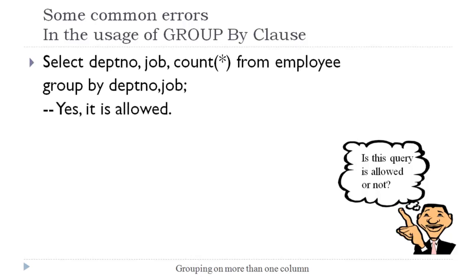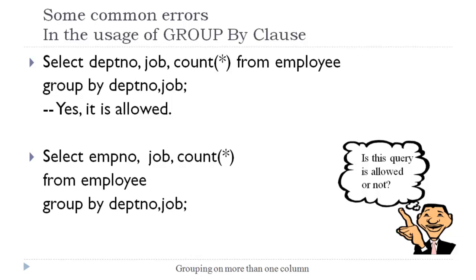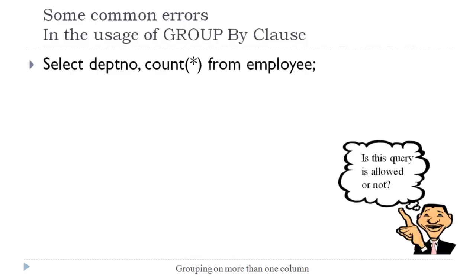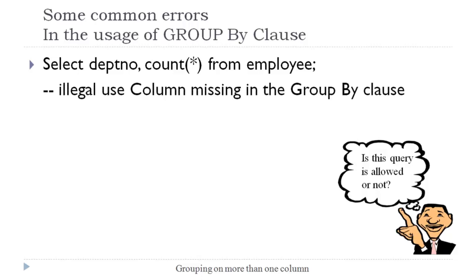A query is correct if we are selecting only those columns in the SELECT list which are used in GROUP BY. Here grouping is performed on department number and job, and we are only selecting those columns, so it is allowed. But if we try to select employee number with a grouping on department number and job, it is not allowed because employee number is a column on which grouping is not performed. Also, selecting an aggregate function and a column without using a GROUP BY clause is not allowed.